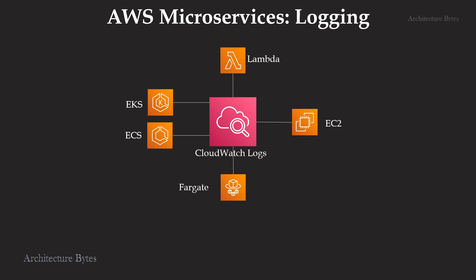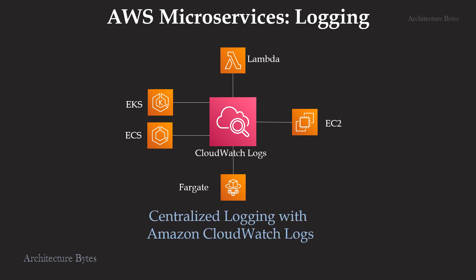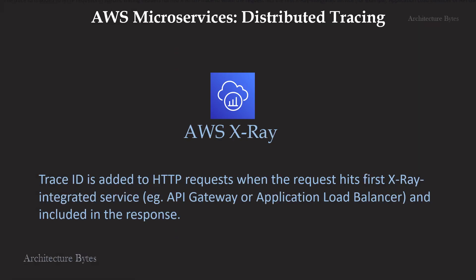Let's discuss logging in AWS microservices. It makes sense to centralize logs, and we can use Amazon CloudWatch Logs for this. Microservices, irrespective of their implementation as Lambda or containers, can send their logs to CloudWatch for aggregation and analysis. A large-scale application with several microservices would need a robust request tracing mechanism to troubleshoot and identify bottlenecks. AWS X-Ray service can be used for this. A trace ID is added to HTTP requests when it hits the first X-Ray integrated service, like API Gateway, which then helps with tracing the request flow.